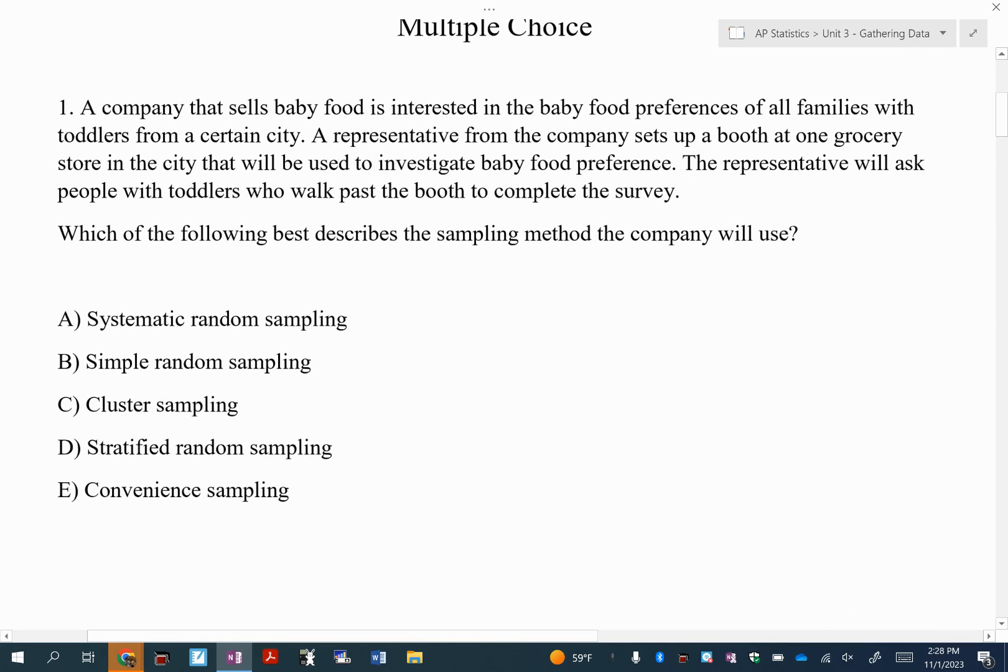This is talking about which of these describes the sampling method that the company used. It looks like they have a representative setting up a booth at a grocery store in the city, and the representative asks people with toddlers who walk past the booth to complete the survey. This is not random at all. This is just convenience in the sense that they'll go to a grocery store where people with children will tend to go from time to time. So the answer for number one is going to be convenience sampling.